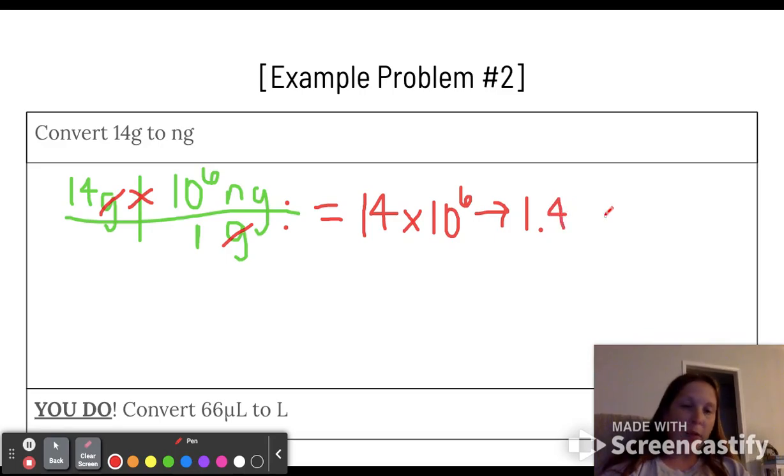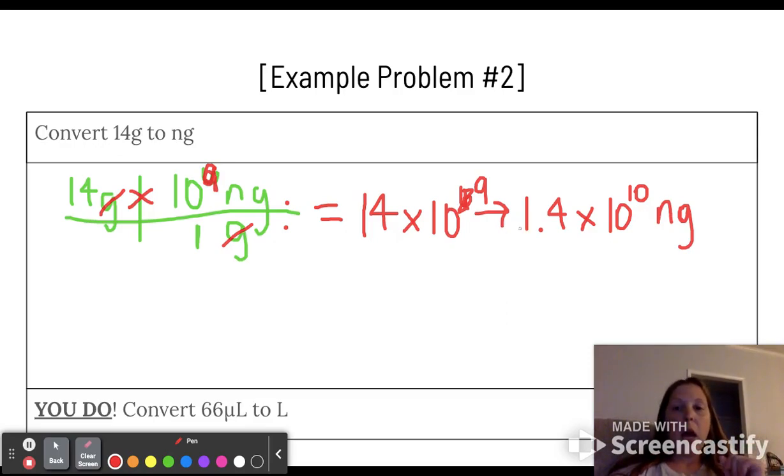You'll see this in the next video, so for your answer down here you do not have to rewrite that. Oh, and I did this wrong, look at me messing up. That should be 10 to the ninth. Micro was down there, 10 to the ninth. 1.4, we gave this one extra decimal place. So this is actually going to be 10 to the 10th nanograms. Again, if you just left this as 14 times 10 to the ninth nanograms, you 100% would get credit for that right now.